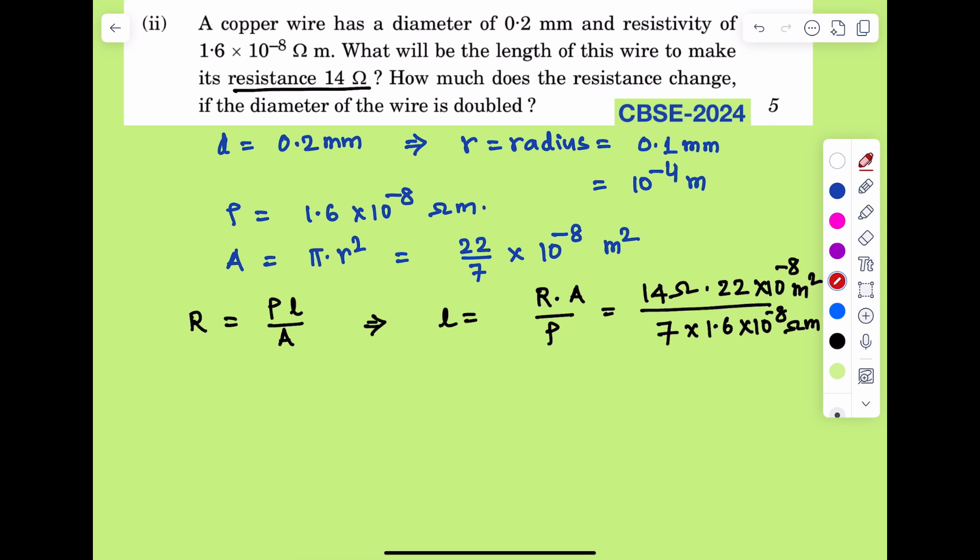Now we will get 14 and 7 is 2, and 10 to the power minus 8, 10 to the power minus 8 will be cancelled out. We will get 440 divided by 16, this much amount of meter, or this is equal to 27.5 meter, which is the answer. This is the length of the copper wire.